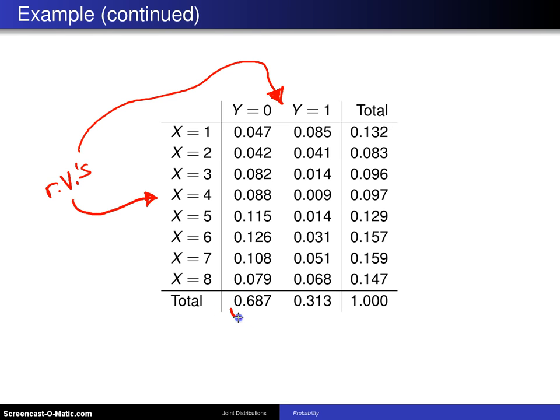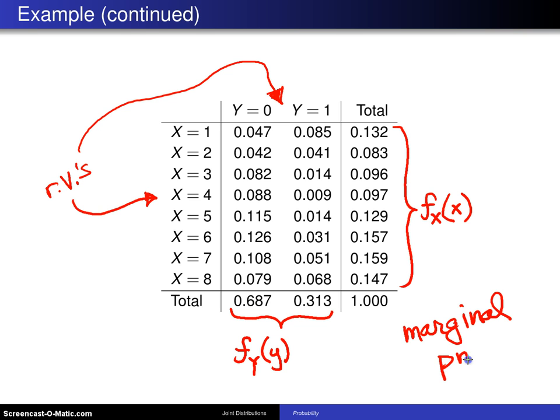Down at the bottom here is something that is known as the marginal distribution, F sub y of y, of y alone. So what that tells you is 68% of the crashes were not alcohol-induced, and 31% of them were alcohol-induced, and that's regardless, that is ignoring the time of day. Likewise, over here, you ignore the whether or not they were alcohol-impaired crashes, and this will give you what is known as the marginal distribution of x.